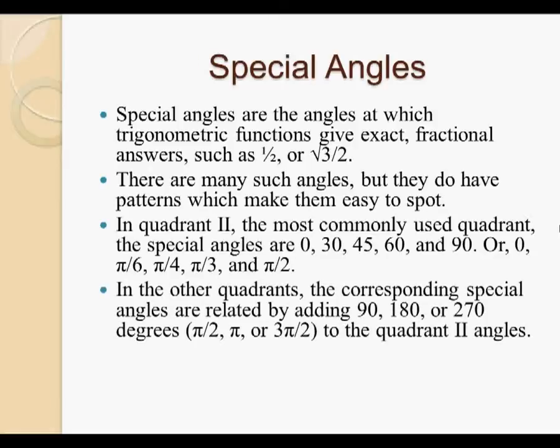In the other quadrants, the corresponding special angles are related by adding 90, 180, or 270 degrees to the quadrant 2 angles, or if you're working in radians, by adding pi by 2, pi, or 3 pi by 2 to the quadrant 2 angles.